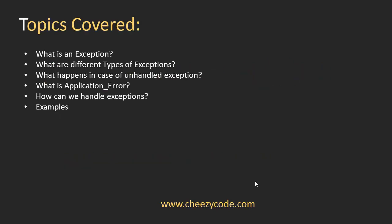These are the topics we are going to discuss. First, what is an exception. Then we'll learn about different types of exceptions. Then we'll see what happens in the case of an unhandled exception — if we are not handling any exception at all, what happens to the application. Then we'll look at the Application_Error method, and then some examples of exception handling in C#.